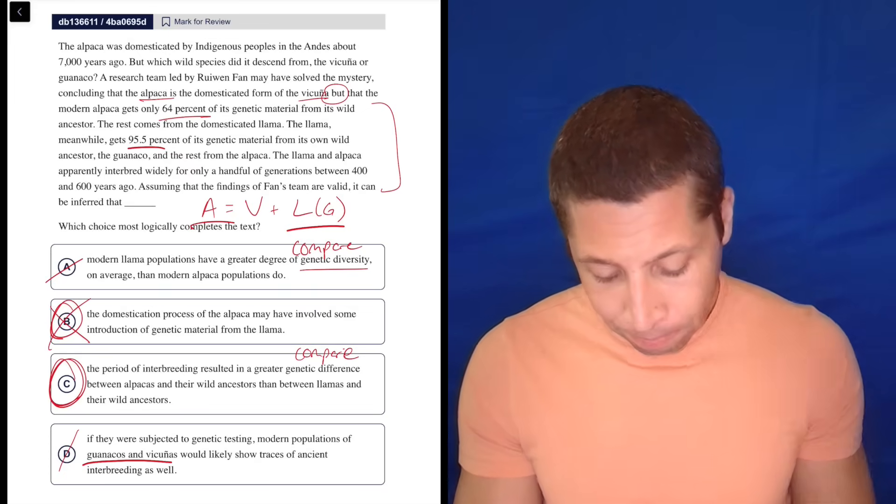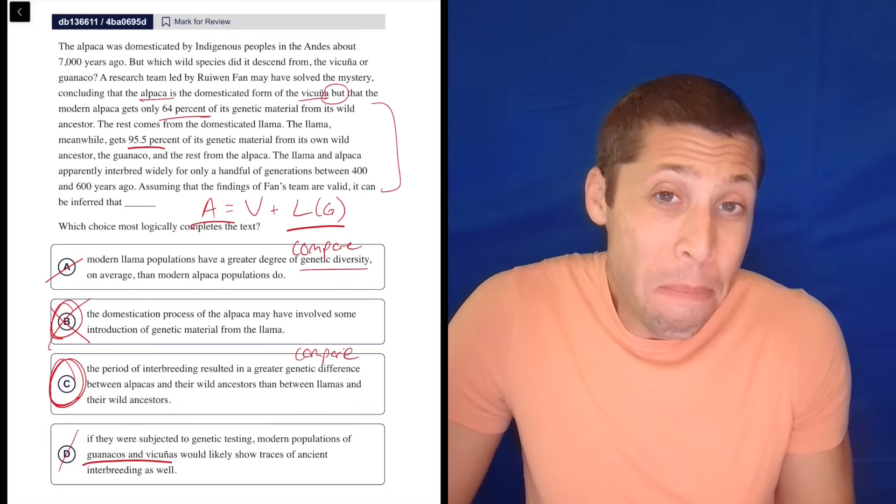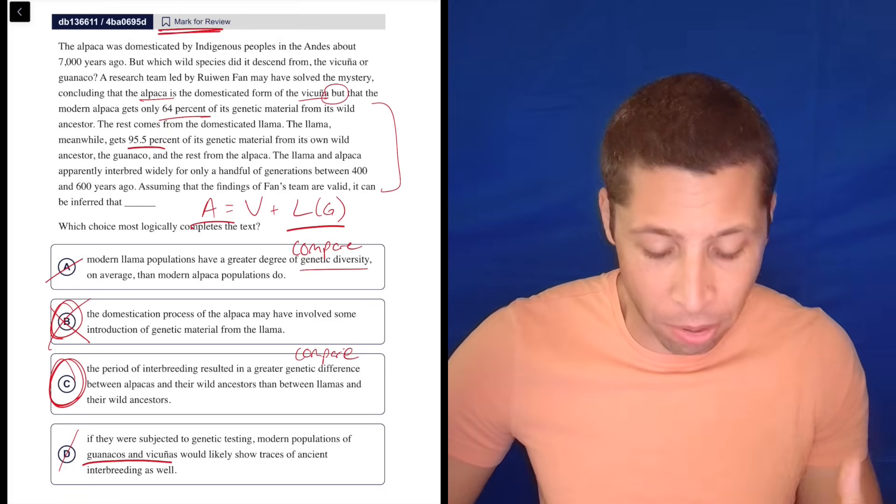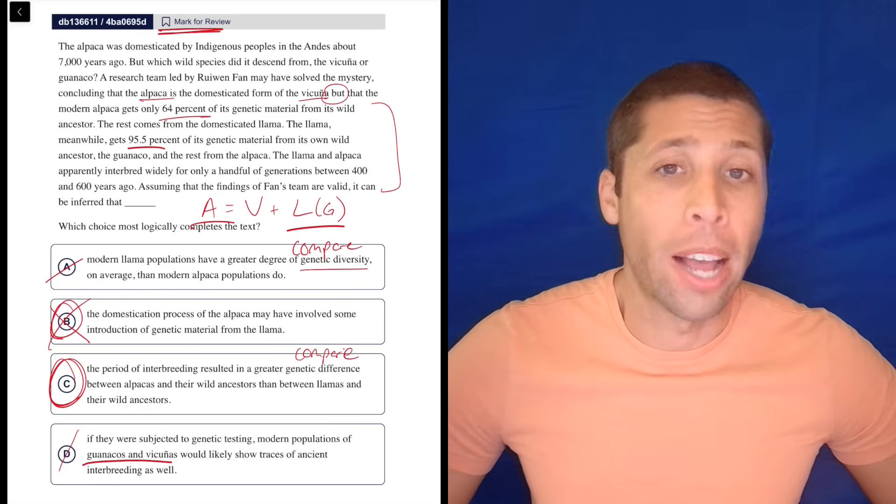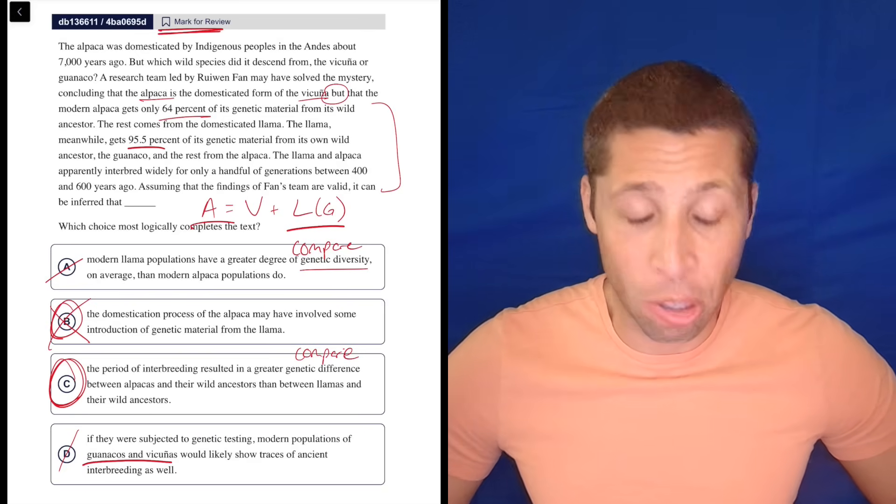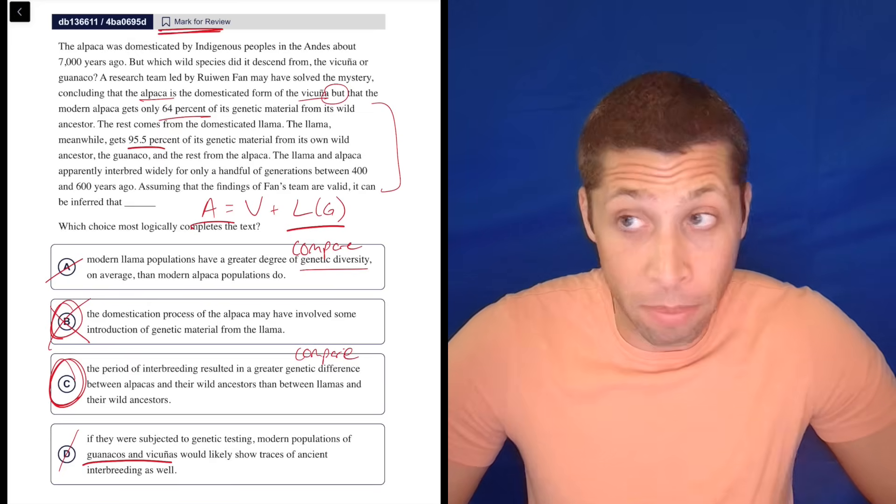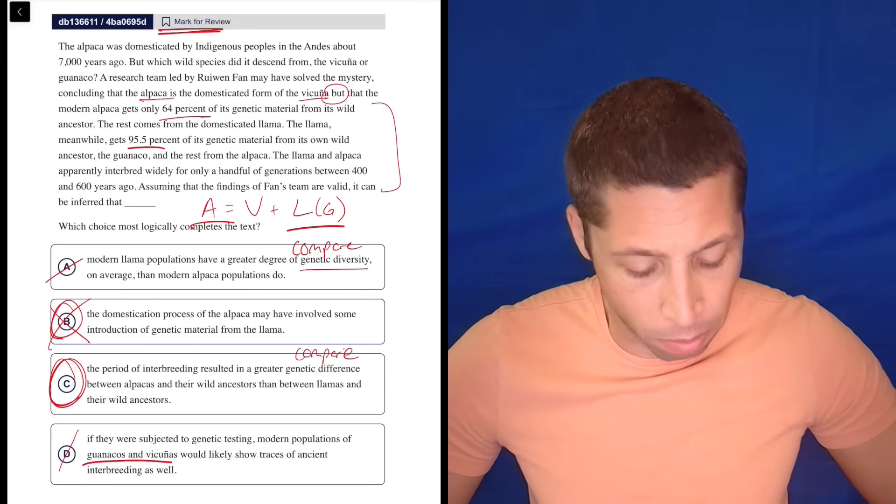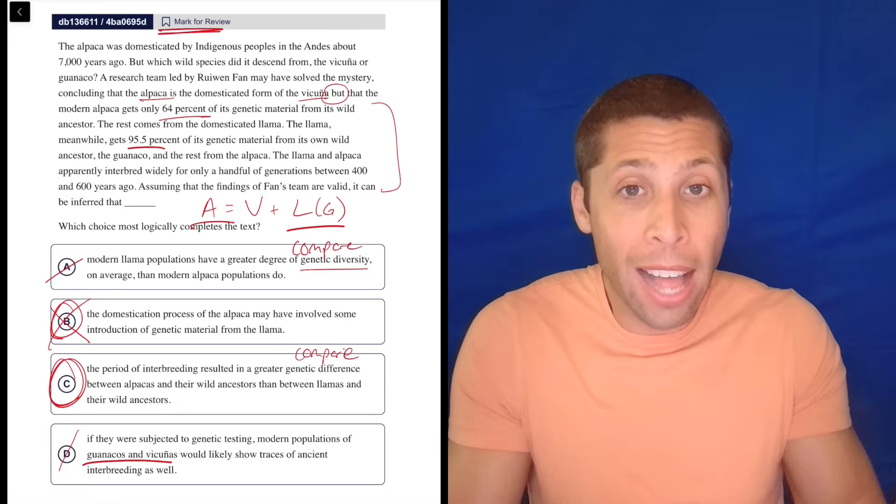And that's wrong. The answer is C. And so I might have gotten lucky on a real test. You know, it's hard to imagine what I would have done, right? Because I'm just seeing this question in isolation, but it's possible I would have marked it for review and gone back and noticed something and changed my answer. But I doubt it. I think I really like B because of how simple it is. It's very dumb. It matches my dumb summary very well. The domestication process of the alpaca may have involved some introduction of genetic material from the llama. Yeah, it's part llama, right? Like that seems right.